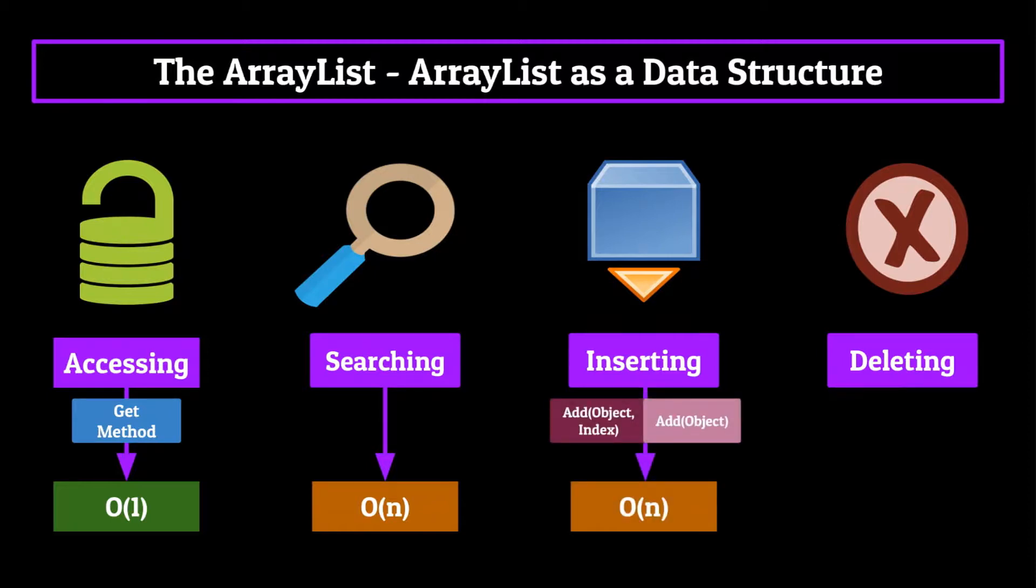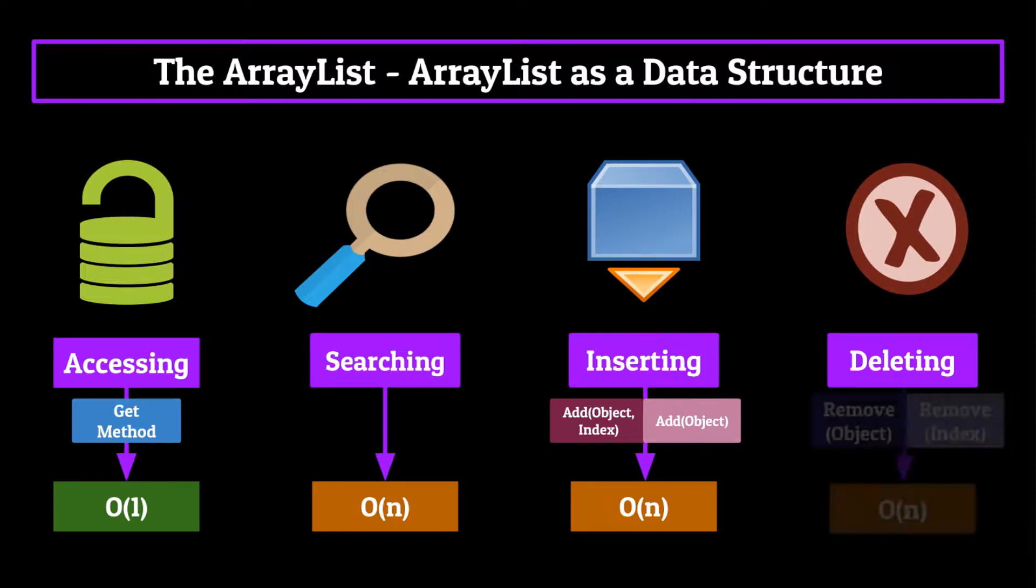Next up, inserting into the ArrayList is going to be O of n, because worst case scenario, if we are inserting an element at the beginning of the ArrayList, we need to do one of two things. Either shift every element after the index we're inserting at to the right one, just like we needed to do for the array, or search through the whole list to find an open spot at the end. Either way you cut it, it'll end up being O of n.